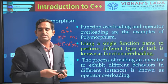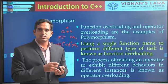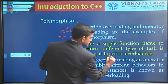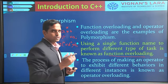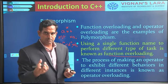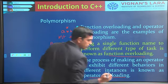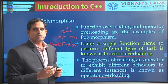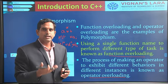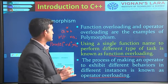Polymorphism is basically implemented using two things: function overloading, where you use one function name to implement multiple operations, and operator overloading, where you use one operator to implement more than one operation.